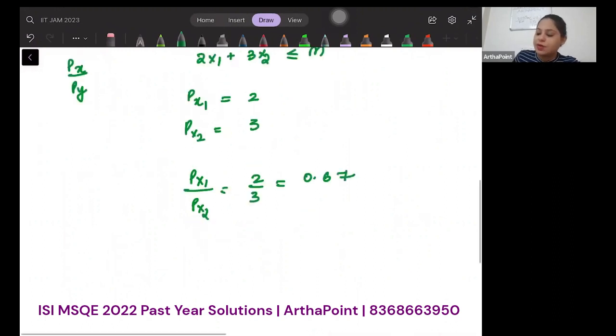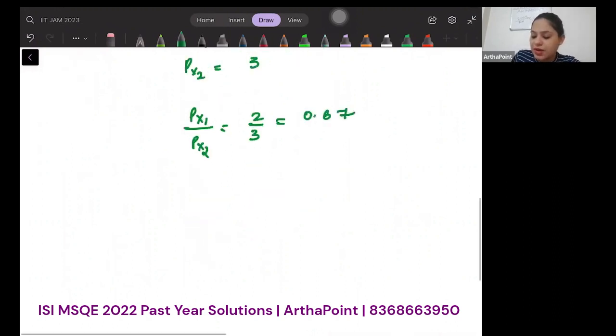Now let's compare. We have MRS is greater than P1 by P2. This implies that whenever this condition occurs with substitute goods, MRS greater than P1 by P2, you consume only good 1. So only good x1 is what I will be consuming.